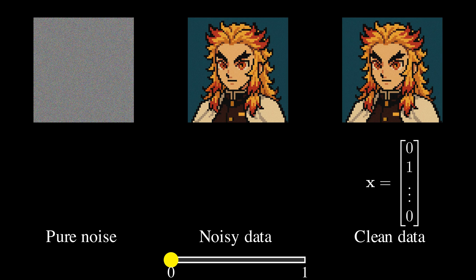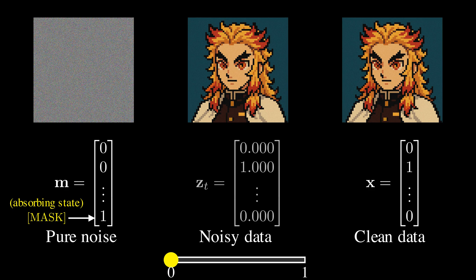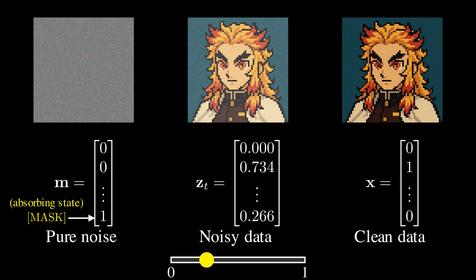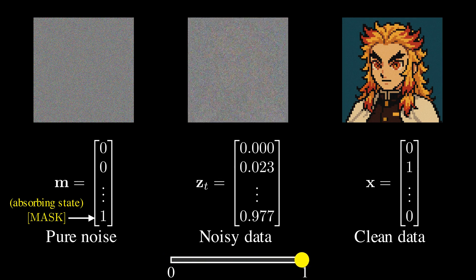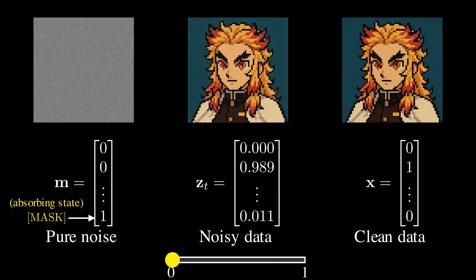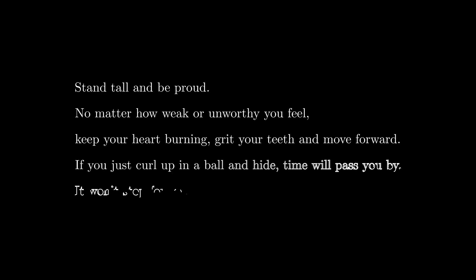For text, we represent a clean token as a one-hot vector. For example, this vector here encodes the second token in the vocabulary. We represent pure noise in the discrete space as a one-hot vector corresponding to a special mask token. The mask token functions as an absorbing state in the diffusion process. After the token is replaced by mask, it stays as mask in all following steps, effectively representing the noise in the system. Just like with images, we generate noisy data by taking a weighted combination of the clean token vector and a pure noise, the mask token vector. Weights are selected to sum up to one, keeping the result as a valid categorical distribution. With the interpolated probability distributions, the forward diffusion process looks like this.